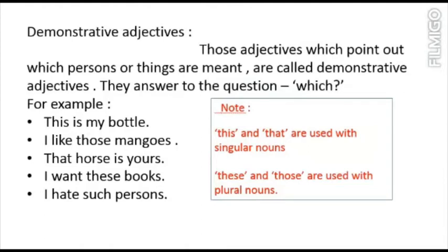Demonstrative adjectives answer the question of which. Note that this and that are used with singular nouns — this for things close to us, and that for things far from us. These and those are used with plural nouns — these for things close to us, and those for things far from us.